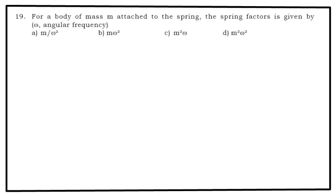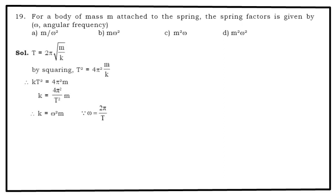For a body of mass M attached to the spring, the spring factor is given by ω, angular frequency. Options are right in front of you. We know that T = 2π√(M/K). By squaring both sides, you get T² = 4π²M/K. Now you adjust those terms. You get K = ω²·M. So ω equals what? 2π/T. So value of K = ω²·M. So the option is B. That is the correct answer.